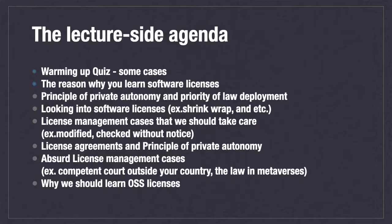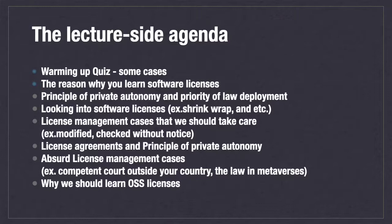This is the lecture-side agenda from last year. I needed to introduce what software licenses are and how to approach them with law. Students should learn the software license principles of private autonomy, law priority, and copyright, before looking into open source software licenses and compliances. Those are really important elements to understand the whole view of software licenses. I also taught software license management by vendors — we need to check several rules in the license to understand software licensing deeply.